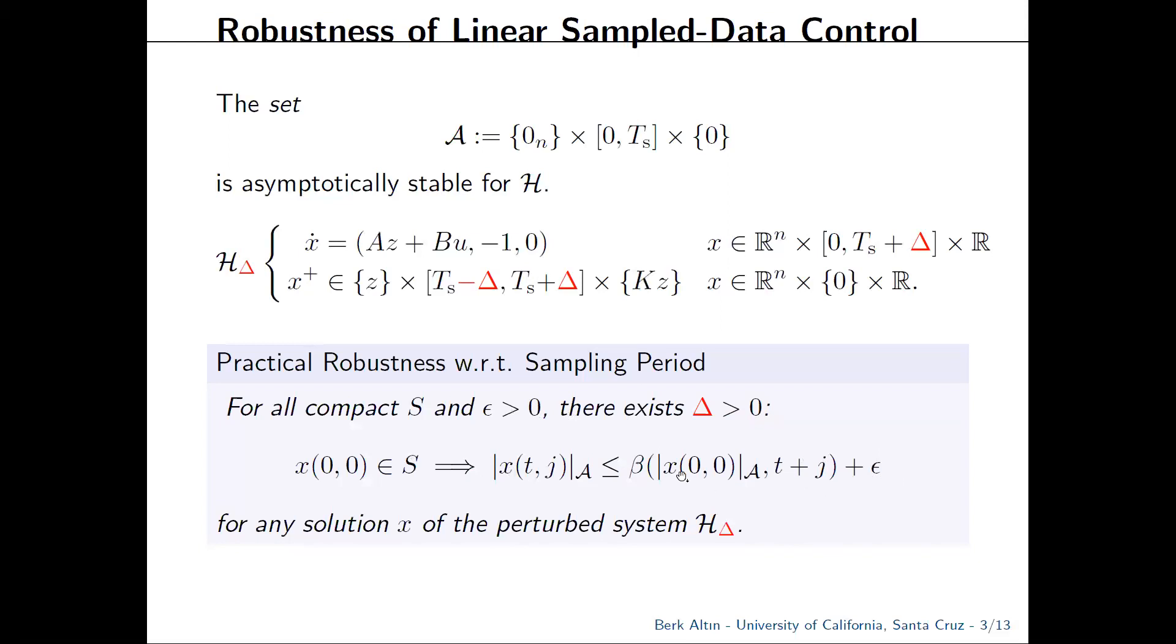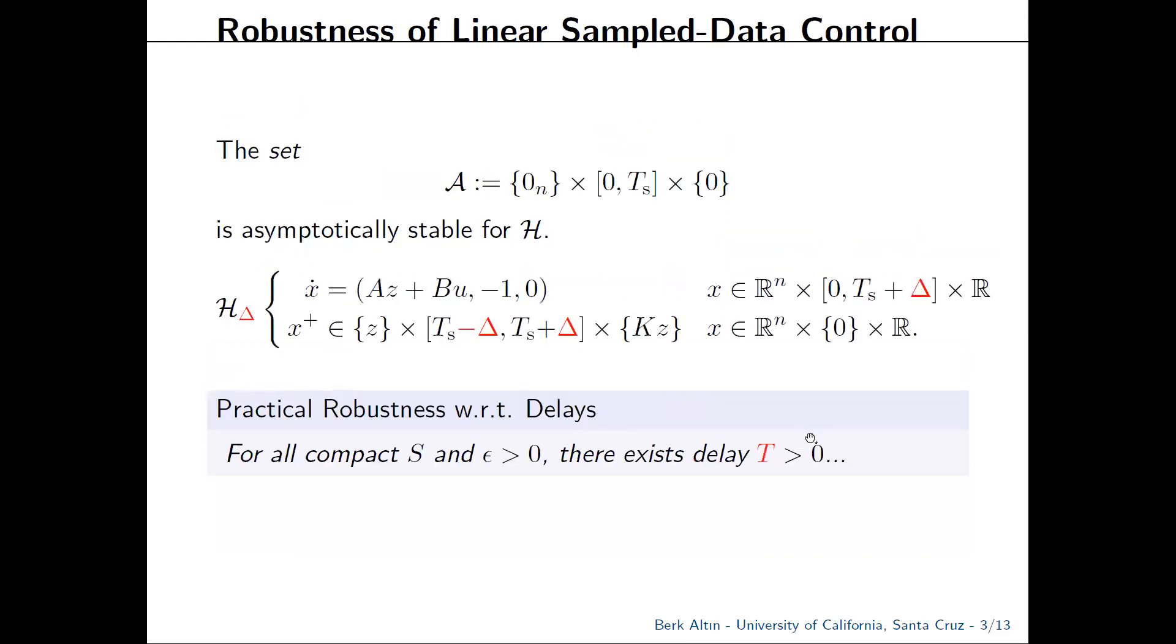Here, beta is a class KL function which allows us to characterize uniform asymptotic stability. So the driving question for this research is whether we can find analogues of this result for the case of delays.